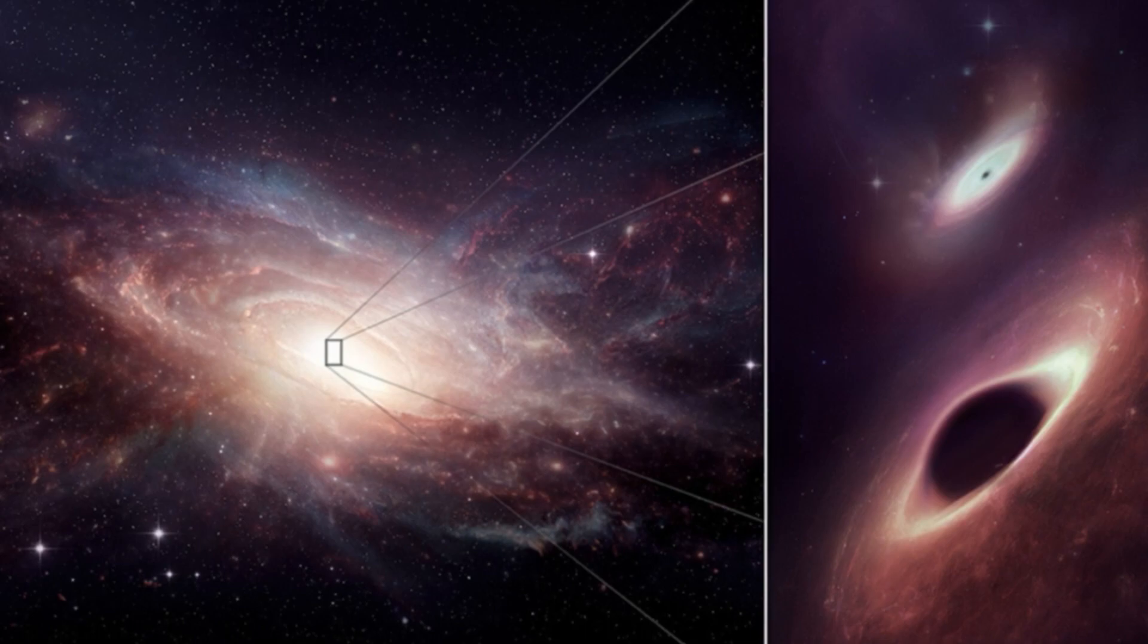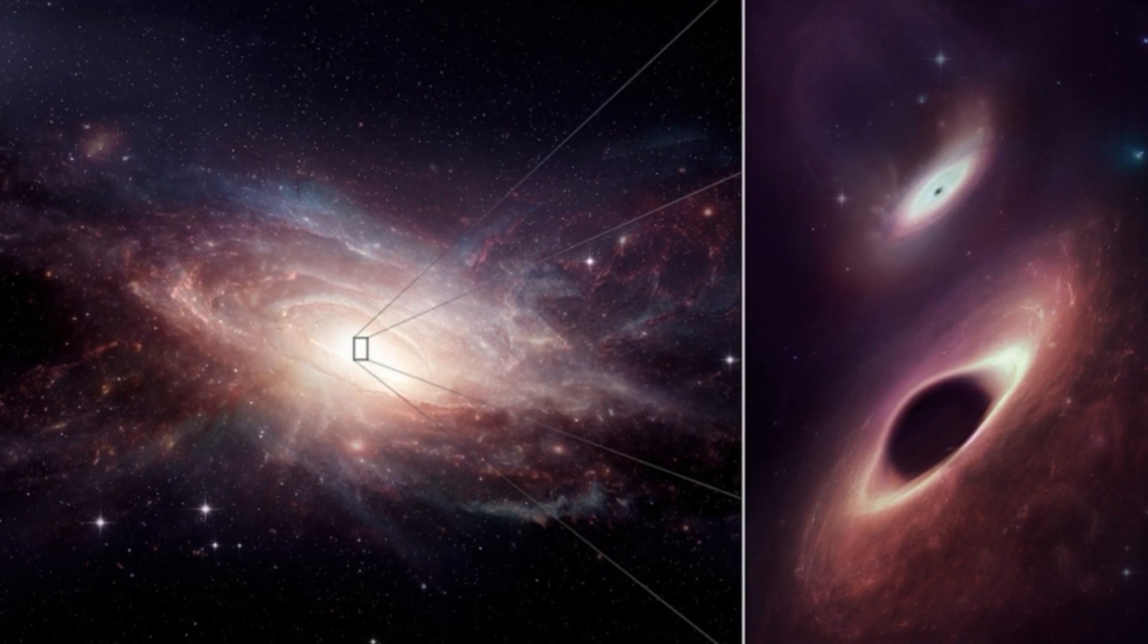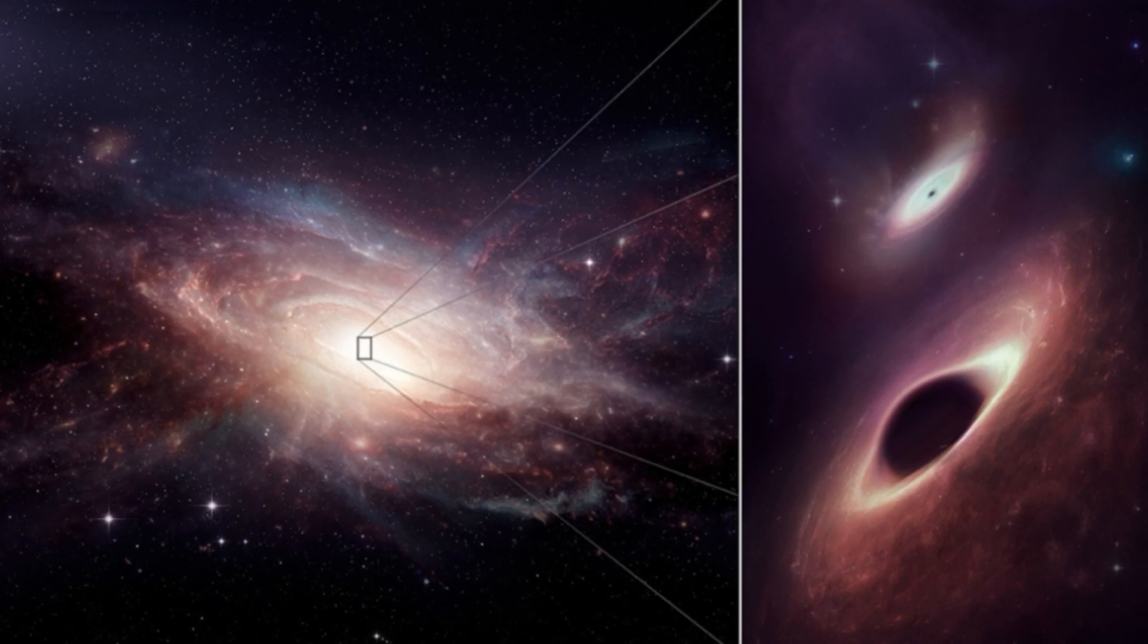They found the destructive duo in UGC 4211, a galaxy 500 million light-years away in the constellation Cancer, which is the result of two separate galaxies merging. UGC 4211 is in the last stages of this merger.